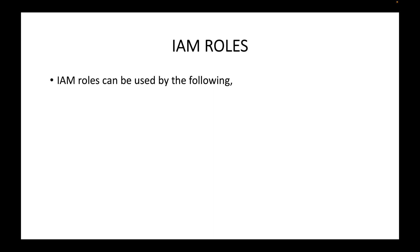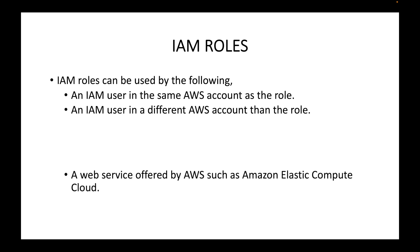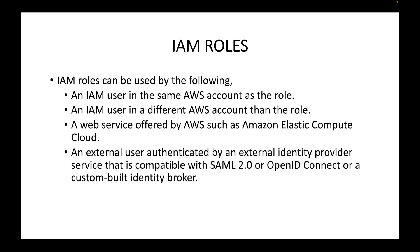An IAM role can be used by the following: an IAM user in the same AWS account as the role; an IAM user in a different AWS account than the role; a web service offered by AWS such as Amazon EC2; or an external user authenticated by an external identity provider compatible with SAML 2.0, OpenID Connect, or a custom-built identity broker. So IAM roles allow access from one account to another, between AWS services, and to applications or identity providers.